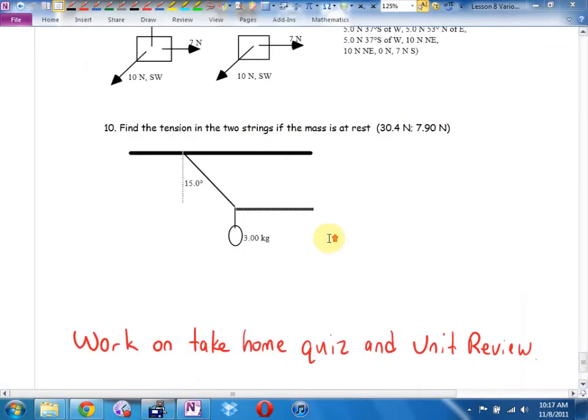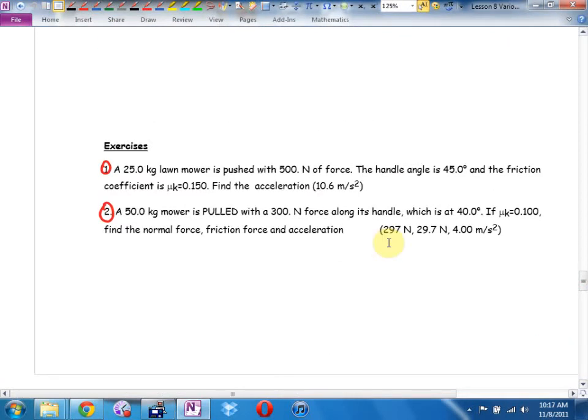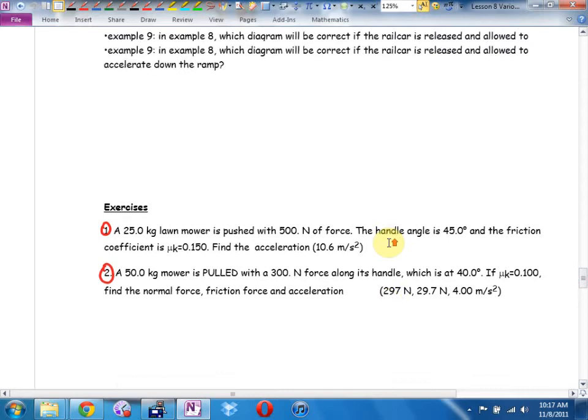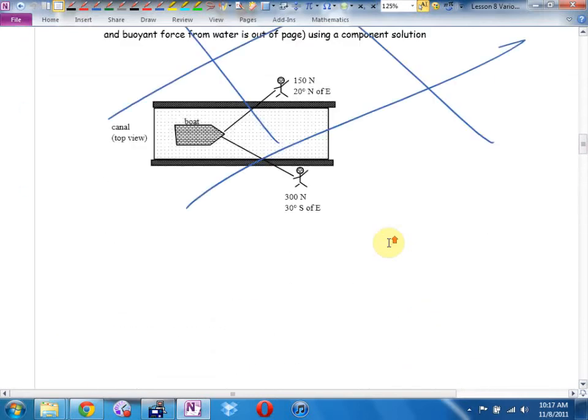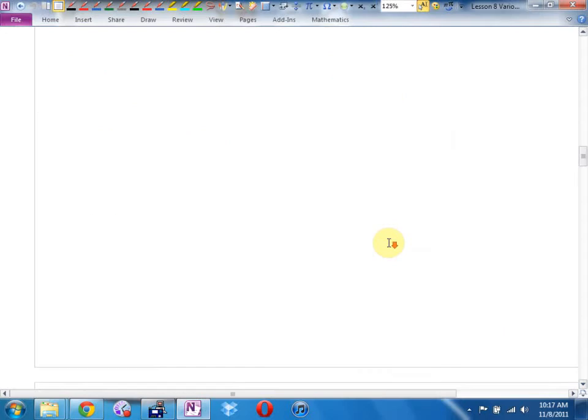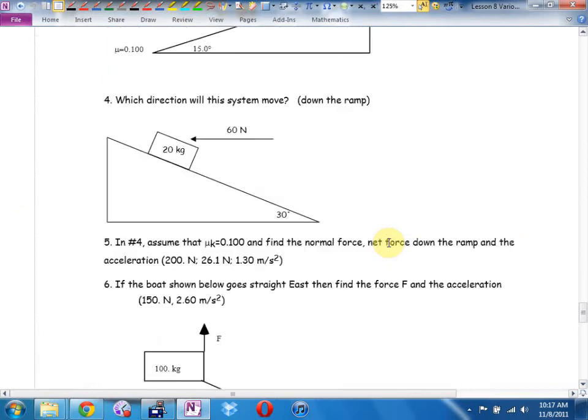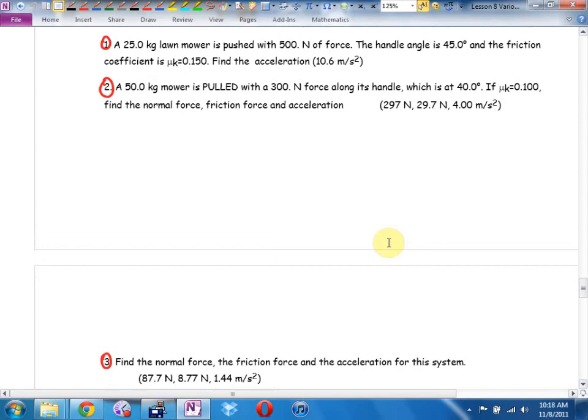Any questions from last day's homework? Gave you a couple of nasties. We looked at the lawnmower question. There is going to be a lawnmower type question on your test. Where the picture looks something like this. Although, I may also, instead of pushing down, I may have you pulling up with a rope instead. In which case, your normal force will be a little bit different. Any questions from the homework that you wanted me to go over? I assigned one, two, three.